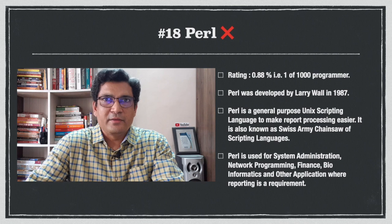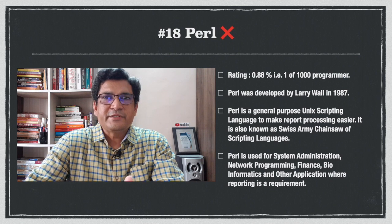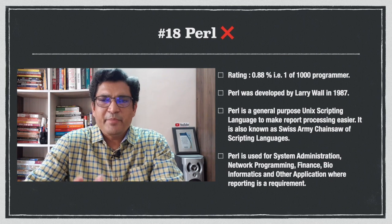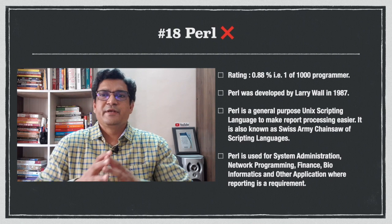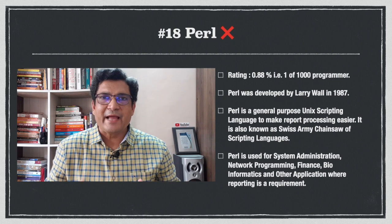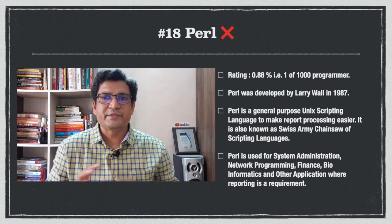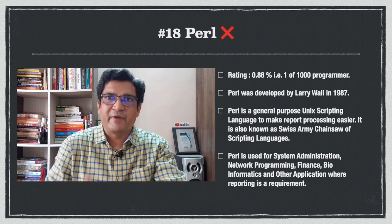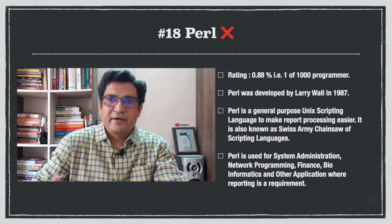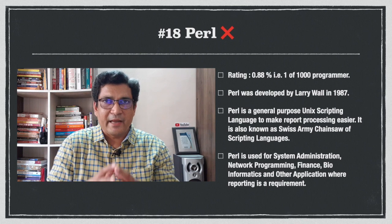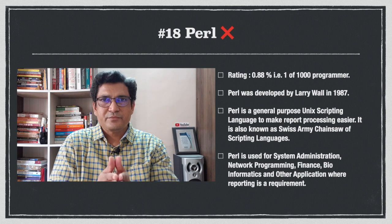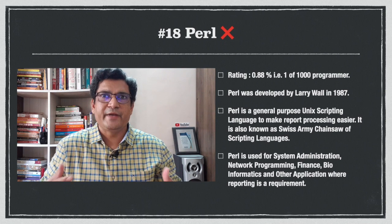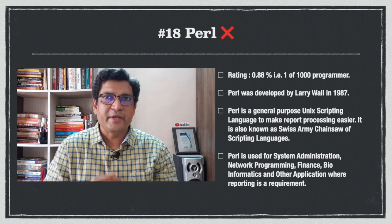At number 18 is Perl, developed by Larry Wall in the year 1987. Perl is a general purpose Unix scripting language designed to make report processing easier. Perl is used for system administration, network programming, finance, bioinformatics, and other applications where reporting and processing huge amounts of data are major requirements.